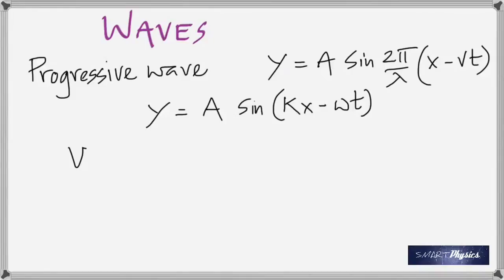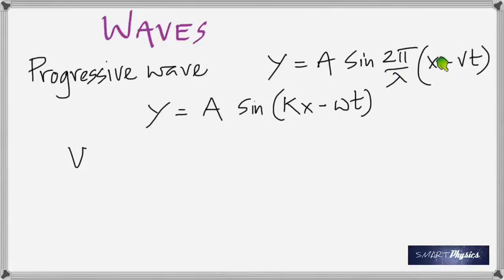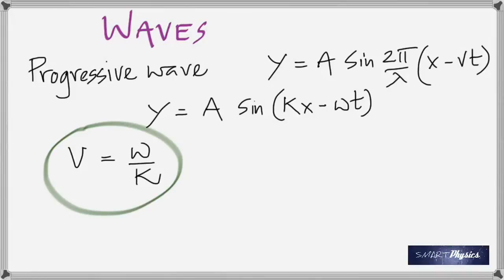In this equation, A is the amplitude. What is k called? It's called the wave number. You can see that k equals 2π/λ. And ω — distributing gives ω equals 2π/λ times v. The speed of a progressive wave is omega over k. That is topic number one.